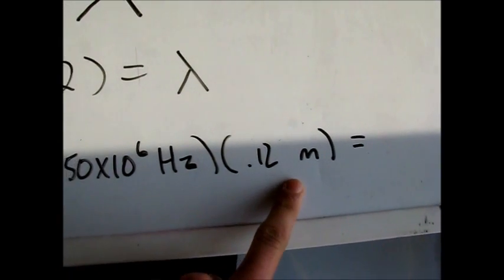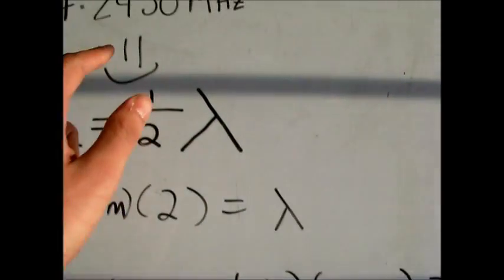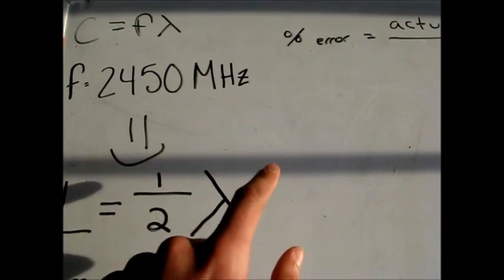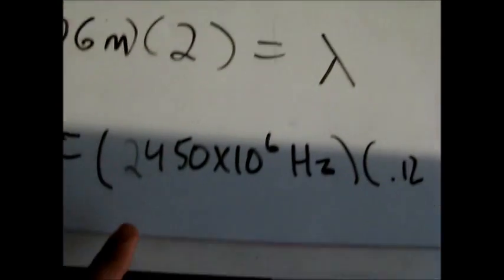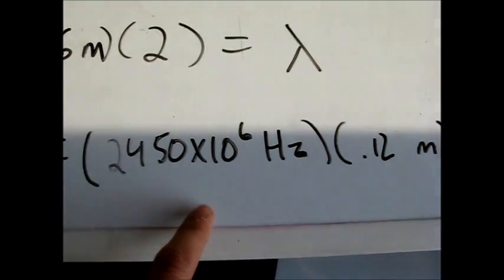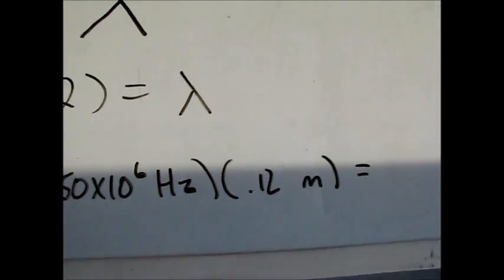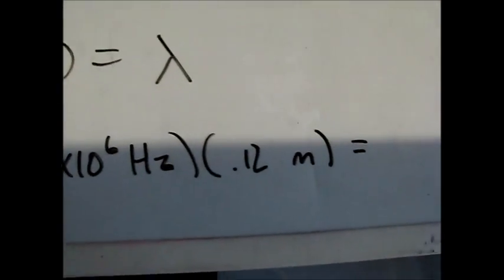From what we said before, our frequency is 2450 megahertz, and mega is times 10 to the 6, so it's 2450 times 10 to the 6 hertz. Now Leslie will do the calculations and tell me what that number is.